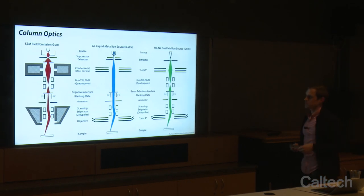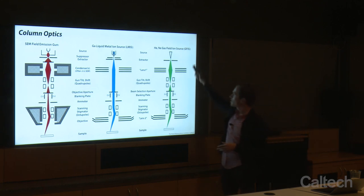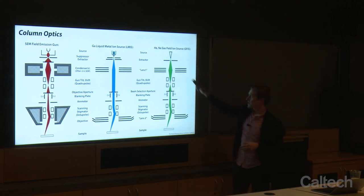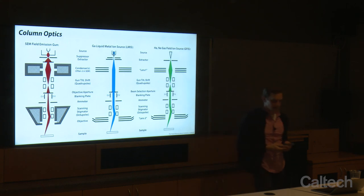As we decrease the current, we decrease the probe diameter, which increases our resolution, but we sacrifice by having less signal available — or if you're milling, less sputter rate. All three columns — SEM, gallium FIB, and GFIS — share essentially the same construction.